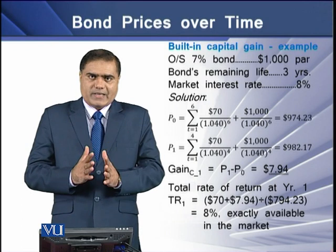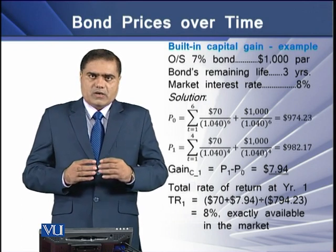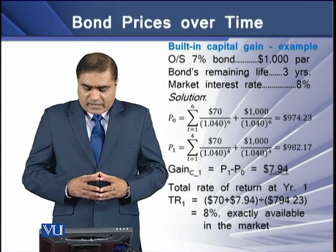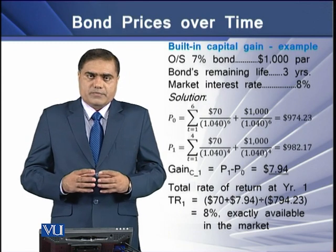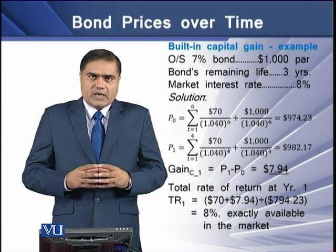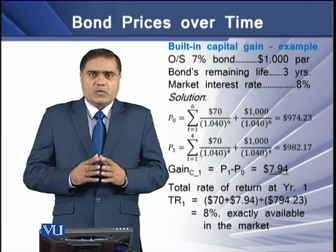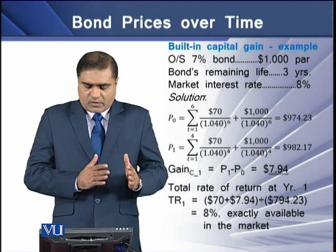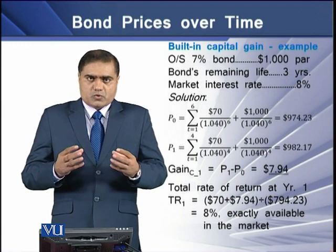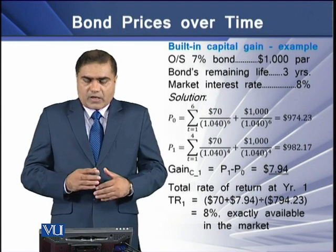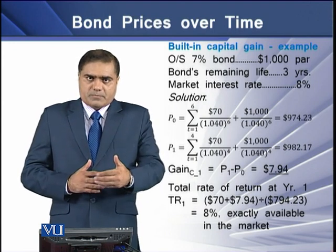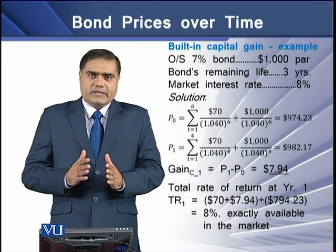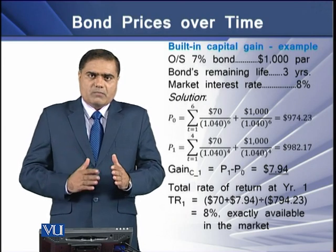To determine the capital gain, we deduct the current price P₀ from P₁, giving a capital gain of $7.94. To find the total rate of return on this bond, we add this capital gain of $7.94 to the annual coupon payment of $70. Dividing the sum of these two figures by the current price P₀ gives a total rate of return of 8%, exactly equal to the market interest rate.